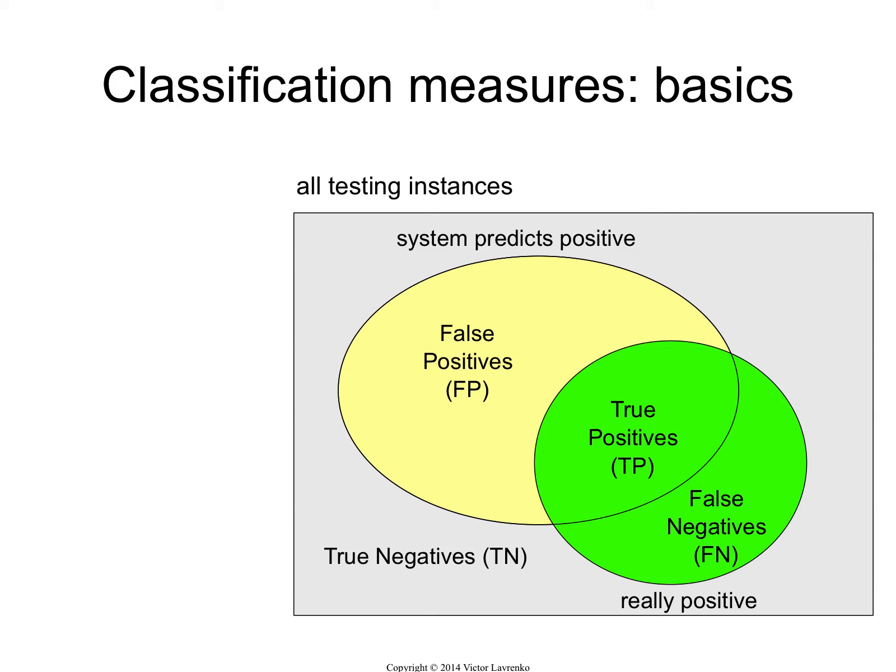False positives are the things that my system thinks are positive, but they're really not — they're really negatives. They're not part of the green, but my system says they're positives, so they're false positives.